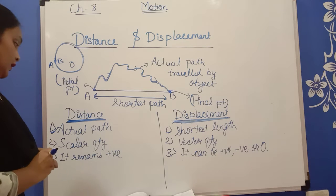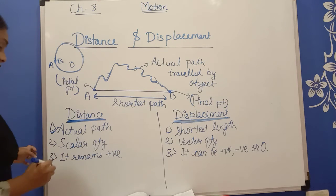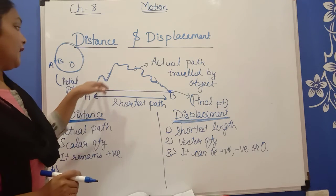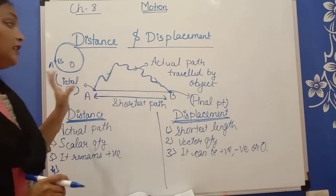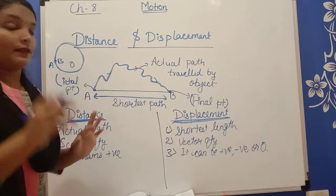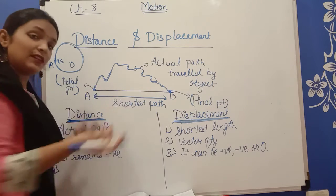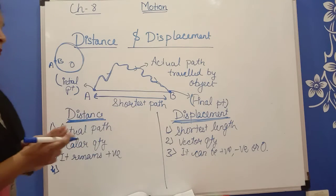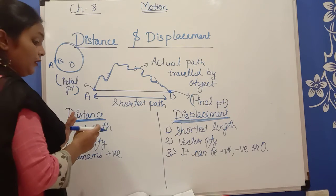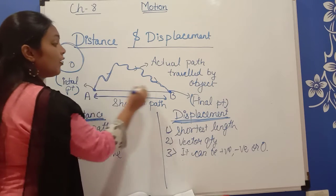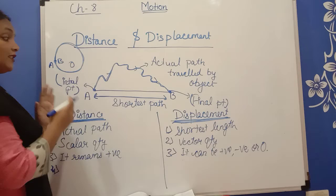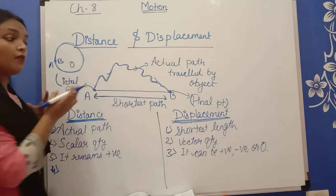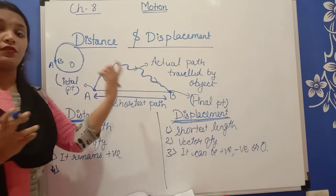That's why we can say displacement can be positive, negative, or zero. But distance is always positive. Distance can be equal to displacement in a linear path. If the path is linear, then distance and displacement are equal. But in displacement terms, it can be equal when the distance covered by the object is short and along a straight line.